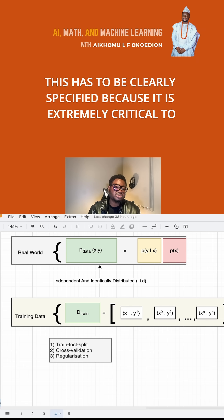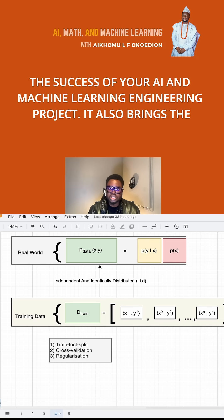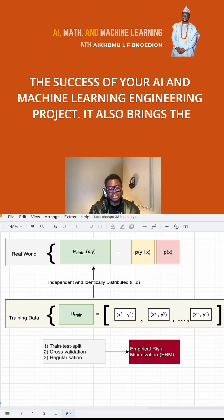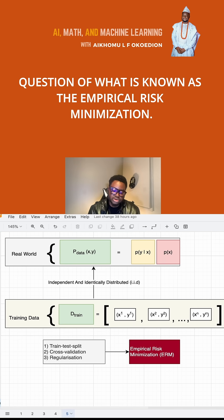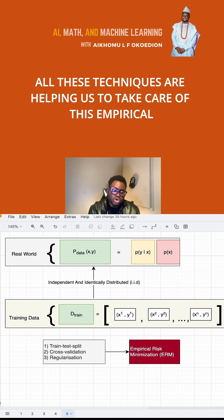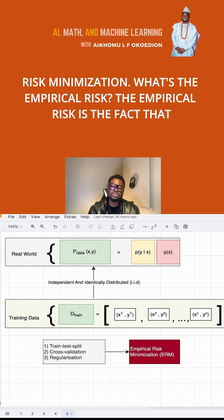Because these are extremely critical to the success of your machine learning engineering project. This also brings the question of what is known as empirical risk minimization. That's what all these are doing - helping us to take care of this empirical risk minimization.